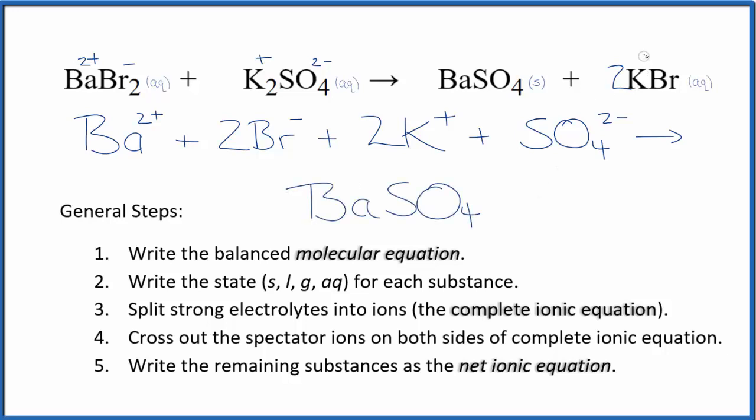We said potassium has a one plus and a bromide one minus. So we'll have those two potassium ions. And we'll have two bromide ions, just like the reactants as well. So this is the complete ionic equation. Now we can cross out spectator ions. They're on both sides of the complete ionic equation. In the reactants, we have two bromide ions. In the products, we also have those two bromide ions. Let's cross those out. Those are spectator ions.